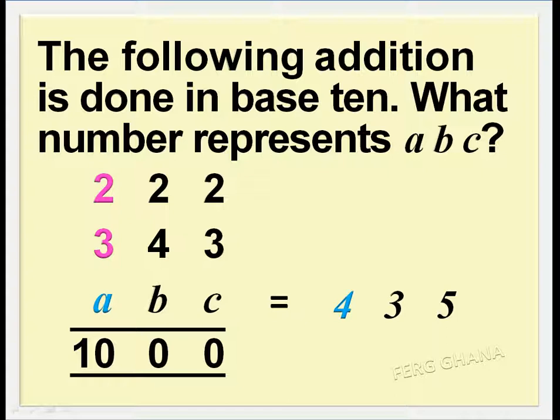Here also, we are carrying 1 after writing down the 0. The 1 plus 2 plus 3 gives us 6. We need 4 to top it up to make it complete, so A equals 4.